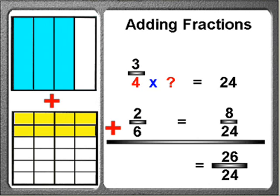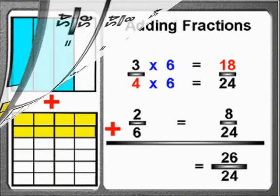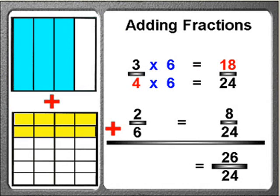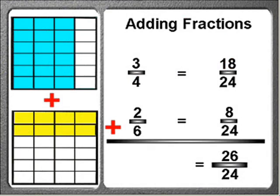Now let's work on the bottom number of four for the fraction three-fourths. The number four multiplied by what hidden number is equal to its own common denominator of twenty-four? Since four times six is equal to twenty-four, multiply that same number of six by the fraction's top number of three and you will now get the new numerator of eighteen. What we have just done was convert the fraction three-fourths into its own matching equivalent fraction of eighteen-twenty-fourths.